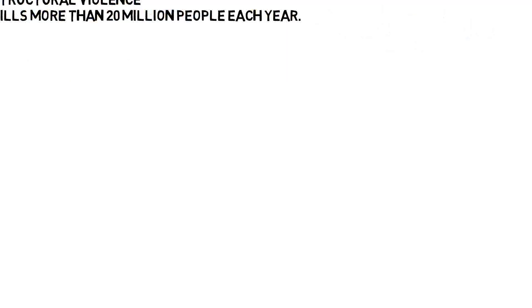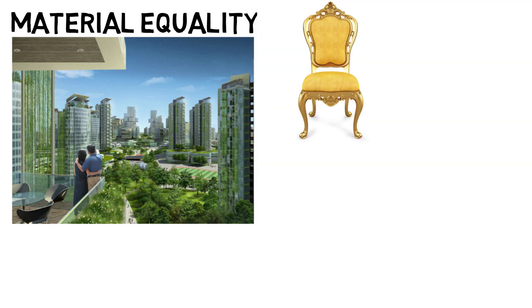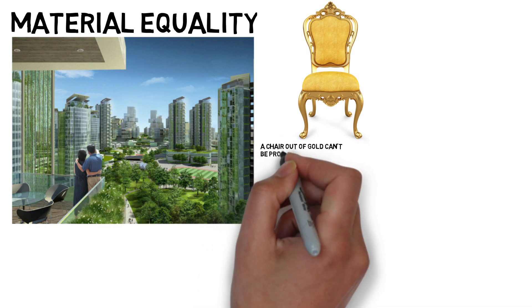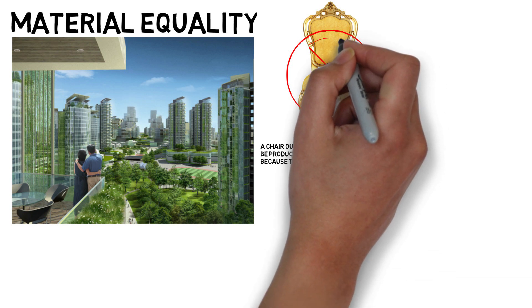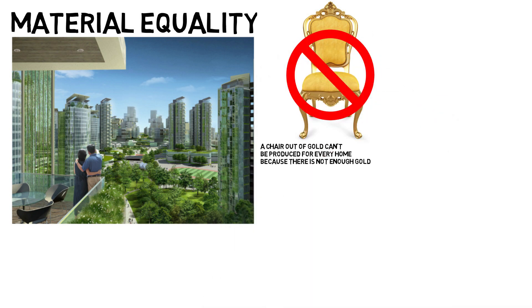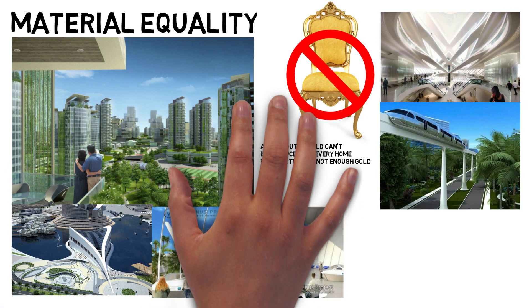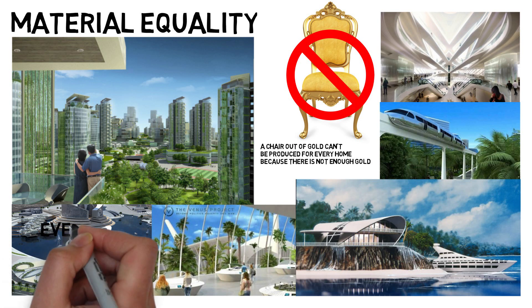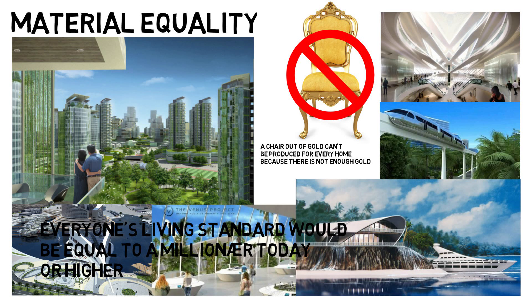In an RBE, material equality is achieved by providing everyone with the same standard of living. If a product cannot be abundantly available to everyone through access — for instance, if there are not enough materials — the product cannot be produced, because this would result in inequality. It is estimated that everyone in an RBE would have a much better living standard than today. In fact, everyone's living standard would be equal to that of a millionaire today. This is due to the focus shift from money-cost efficiency to resource-cost efficiency.